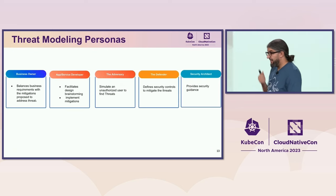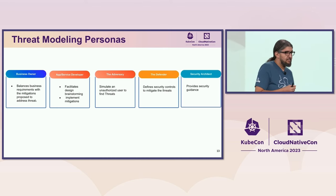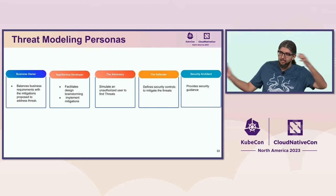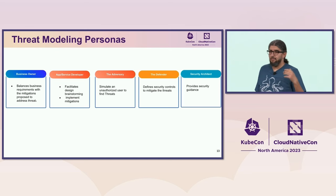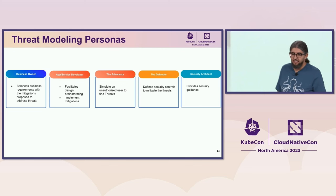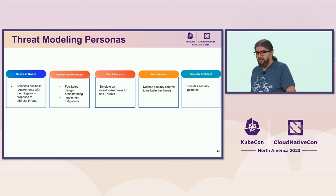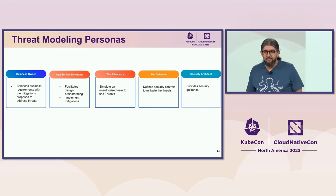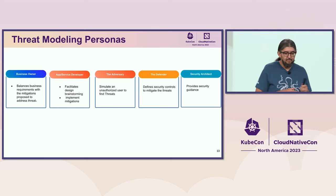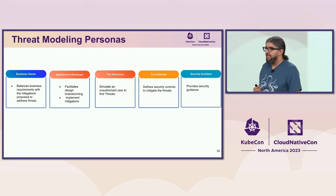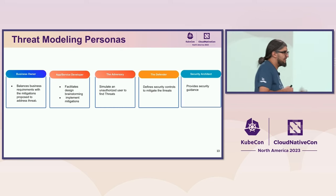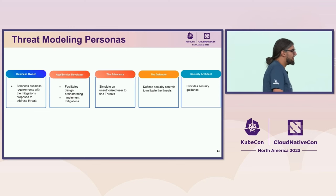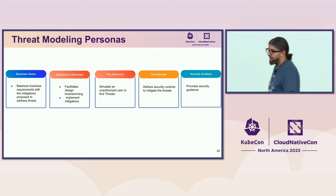Let's define the personas involved. The business owner balances business and security requirements. The application developer helps identify the architecture and implements mitigations. The adversary puts themselves in the shoes of an attacker and mimics the same tactics. The defender thinks about implementing mitigations. And the security architect advises on best practices and regulations the company needs to comply with.